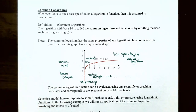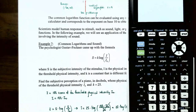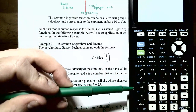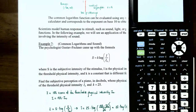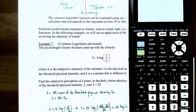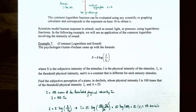The common logarithm function can be evaluated using a scientific or graphing calculator — it corresponds to the exponent on base 10 that gives you the argument x. The log button on your calculator is a base 10 logarithm. Scientists model human response to stimuli such as sound, light, and pressure using logarithmic functions. That's one of the applications of the common logarithm.